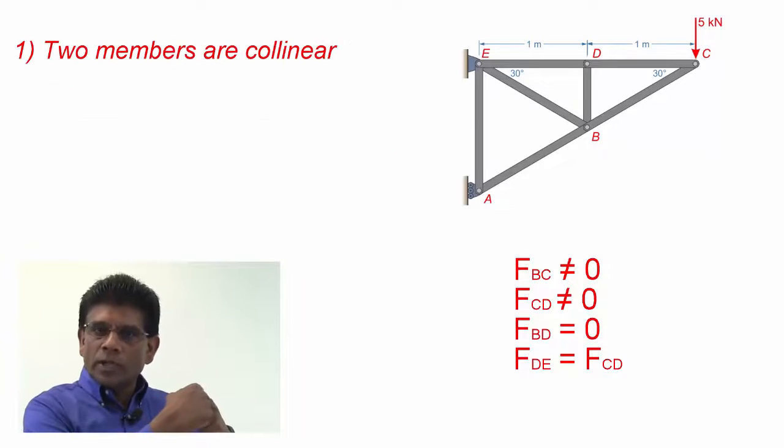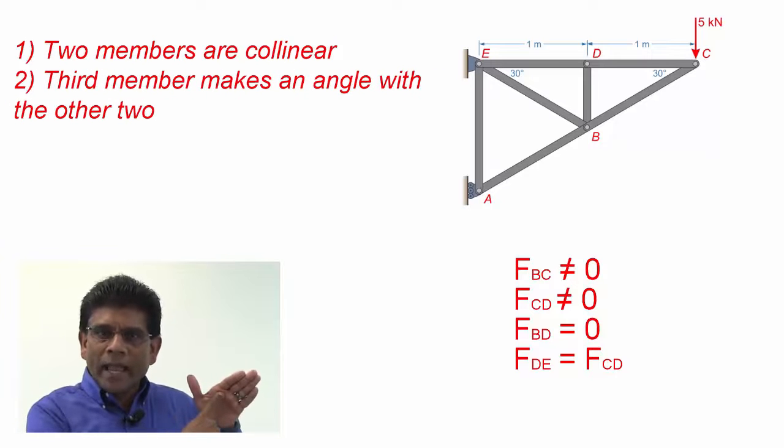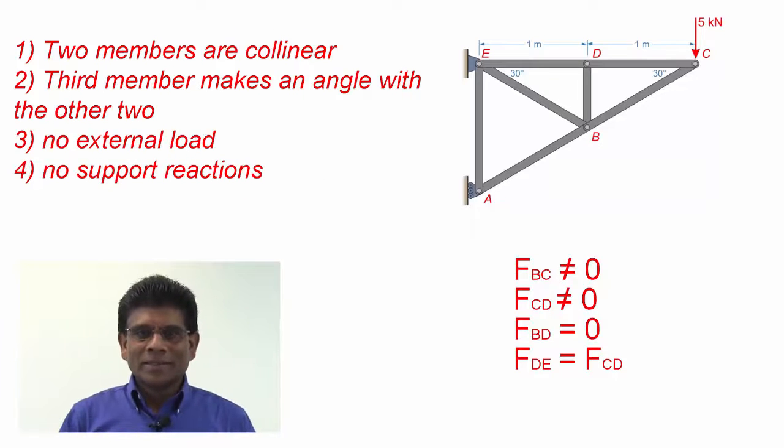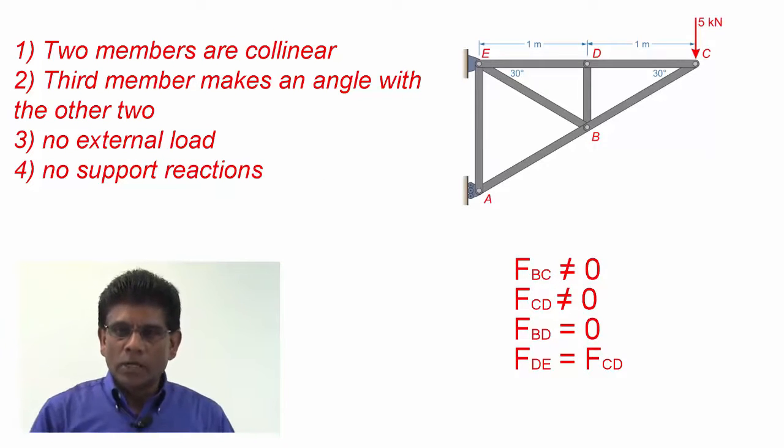One, two members are collinear. Third member makes an angle with the other two. There is no external load. And there is no support reaction. Now, I can put all these facts into a single rule.